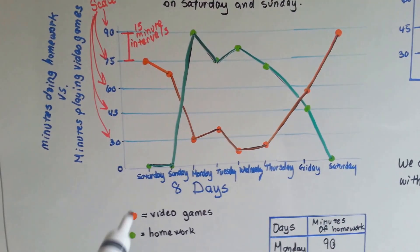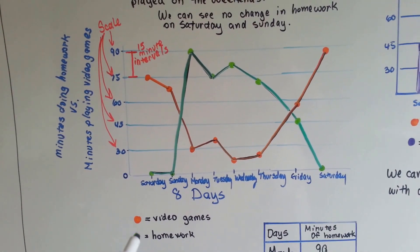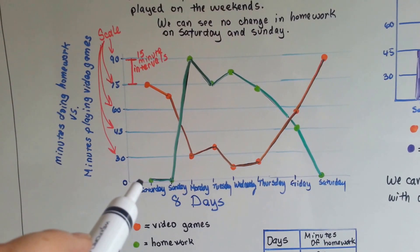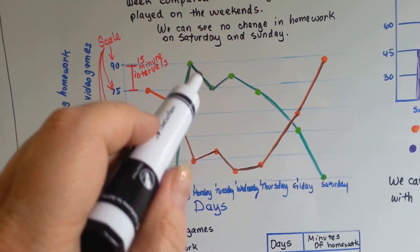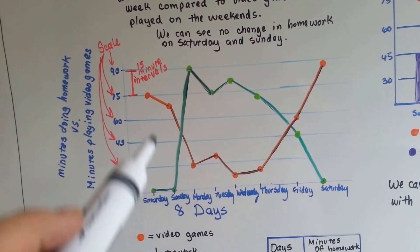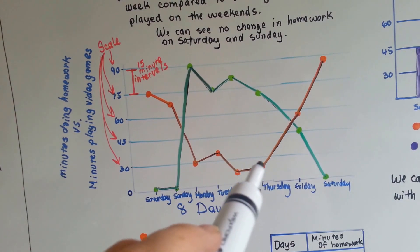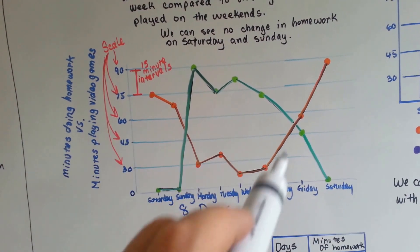Our little chart here shows us that the green is homework and the orange is video games. We can see homework on weekdays is done, and then by the weekends it falls off. Video games are played a lot on the weekends, but falls off during the weekdays when there's more homework.